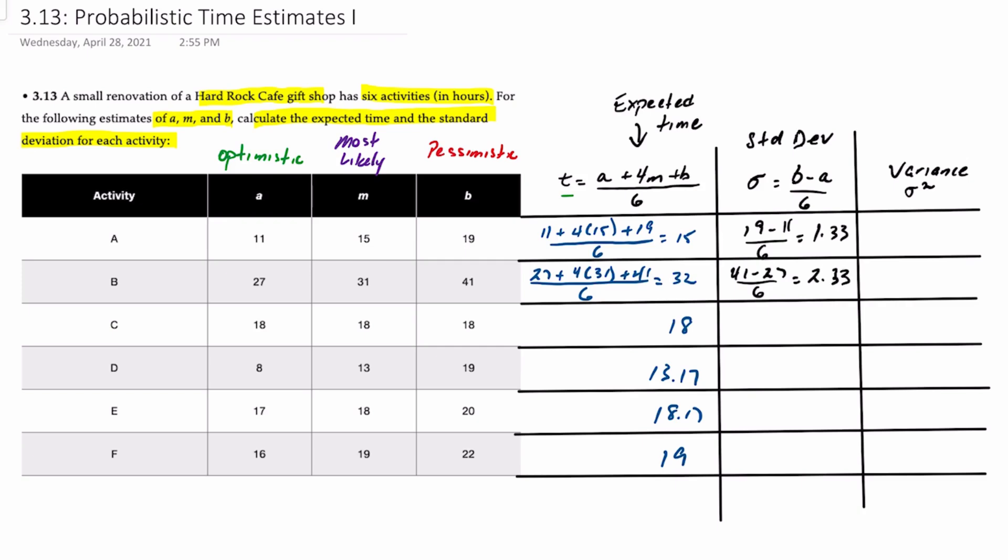And if we follow that same process all the way through, if we look at activity C, we'll end up with 0 because all the times are actually the same. Activity D, you should get 1.83 hours. Activity E, 0.5 hours. And activity F will be 1.